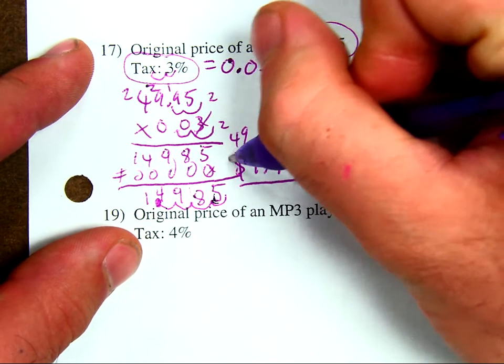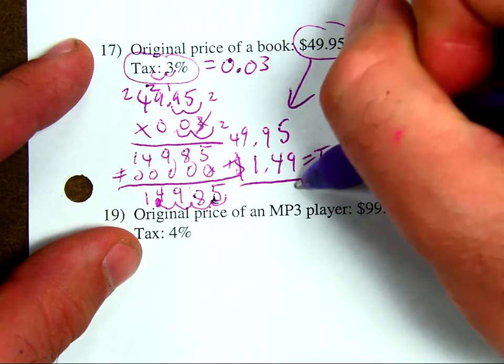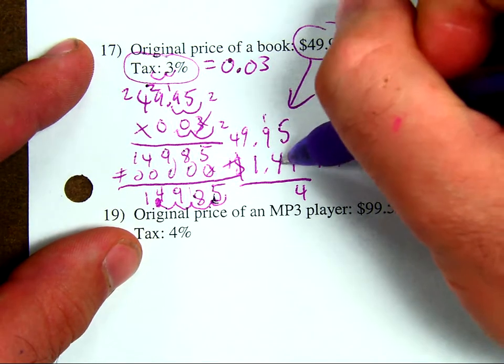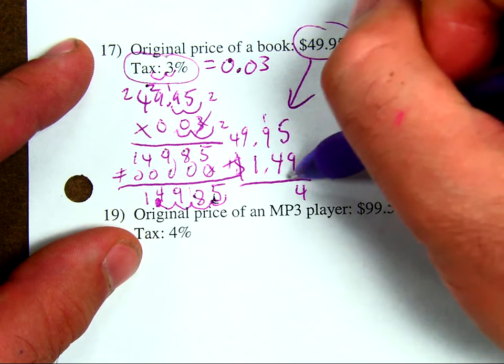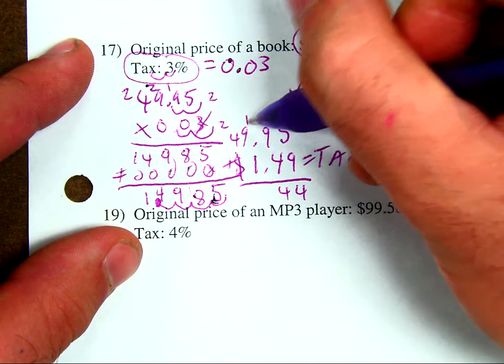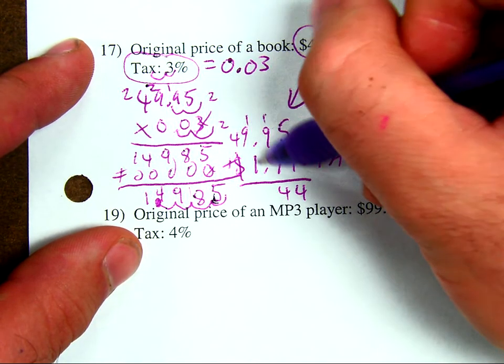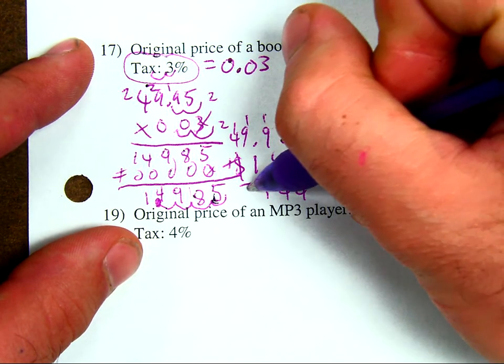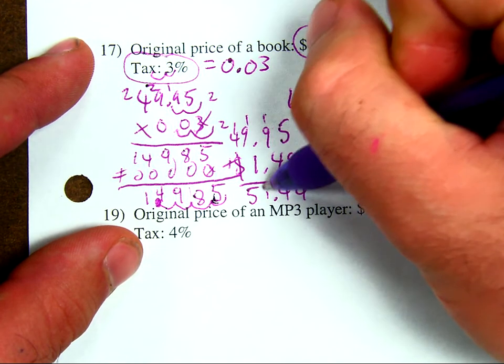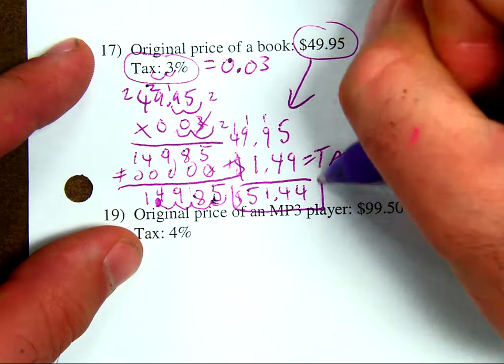Add it up. Now, I have 9 plus 5 is 14. 9 plus 4 is 13. Plus 1 is 14. Carry the 1. 9 plus 1 is 10. Plus 1 is 11. Carry the 1. 1 plus 4 is 5. My total price will be $51.44.